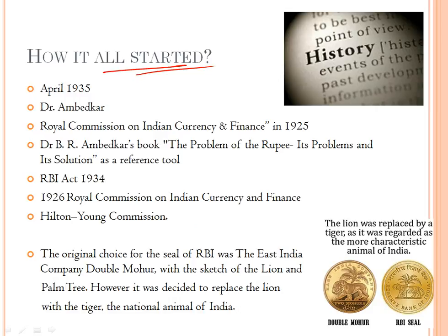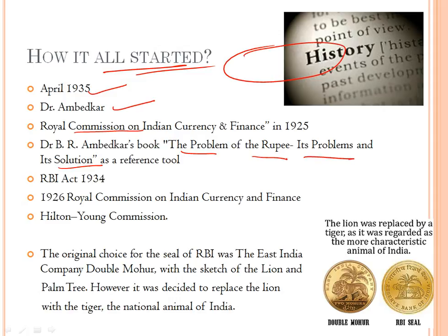Now let us see how it all started — the history part. The Reserve Bank of India was founded on 1st April 1935 to respond to the economic troubles after the First World War. The RBI was conceptualized based on the guidelines presented by Dr. Ambedkar to the Royal Commission on Indian Currency and Finance in 1925. The Commission members found Dr. Ambedkar's book, 'The Problem of the Rupee: Its Problems and Its Solution,' as a reference tool. The central legislative assembly eventually passed these guidelines as the RBI Act 1934, and the bank was set up based on the recommendations of the 1926 Royal Commission on Indian Currency and Finance, also known as the Hilton Young Commission.